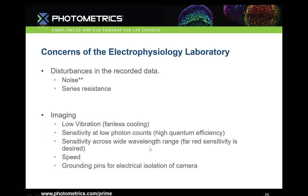The number two concern of the electrophysiologist — behind choosing the experimental conditions — is minimizing disturbances in the data. Fluctuations in the recorded data reduce the confidence of that data and must be carefully controlled. Noise can arise from many sources and create potentially unusable data. Series resistance is a loss of efficiency of the voltage applied to the sample, meaning the set voltage is not what's being applied to the cell, skewing all results.